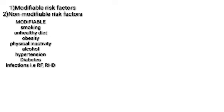Further modifiable risk factors include harmful use of alcohol, which is another risk factor predisposing individuals to cardiovascular diseases, as well as hypertension, diabetes, and hyperlipidemia. Infections also contribute — examples of infections that can predispose individuals to cardiovascular conditions include rheumatic fever, rheumatic heart disease, HIV, and others. These are all modifiable risk factors toward which our preventive mechanisms can be directed.